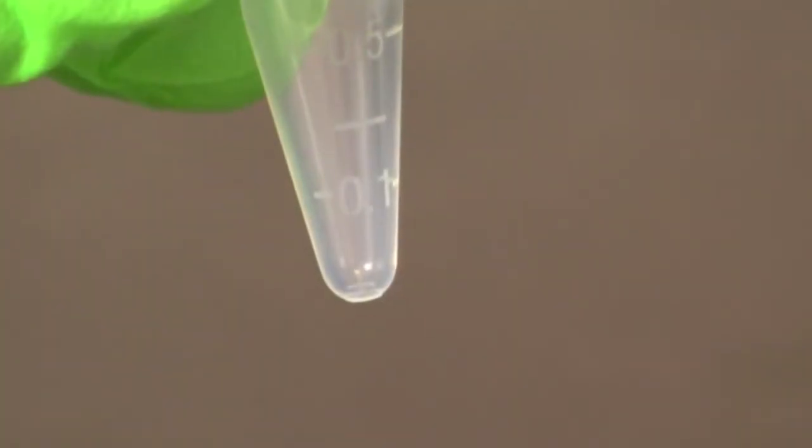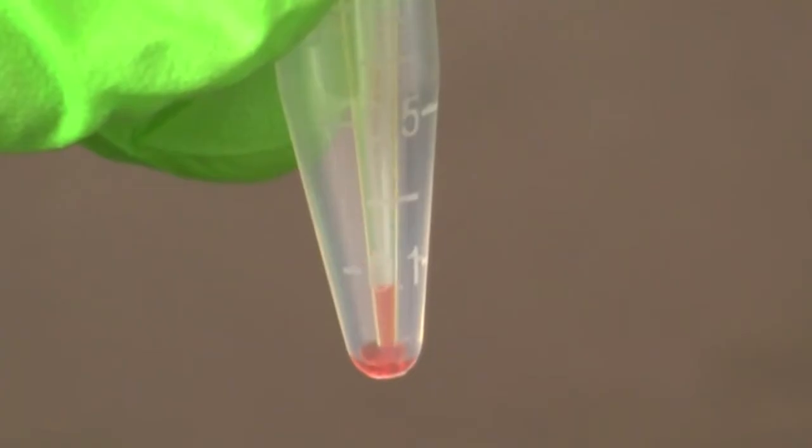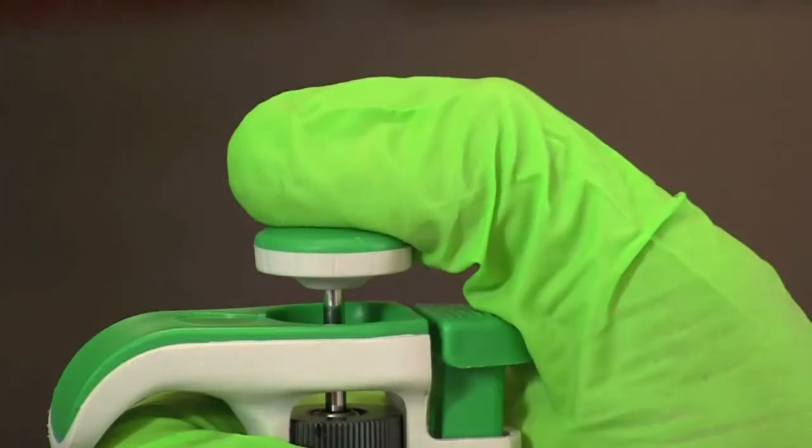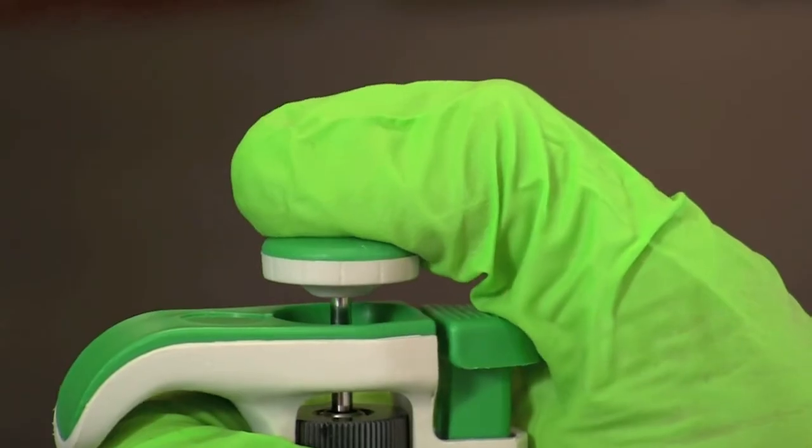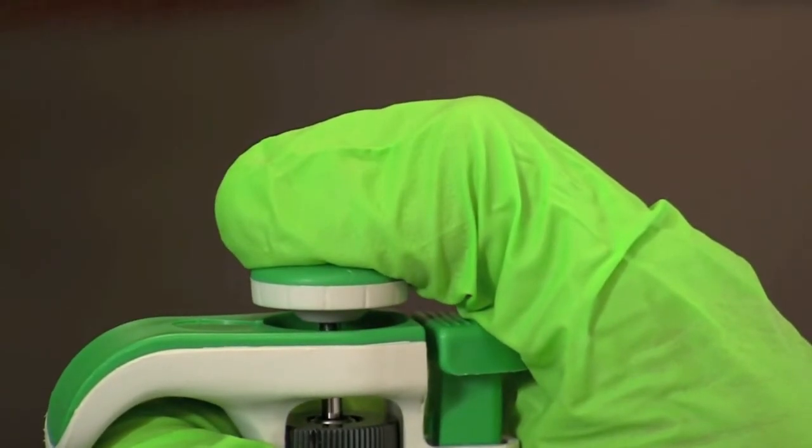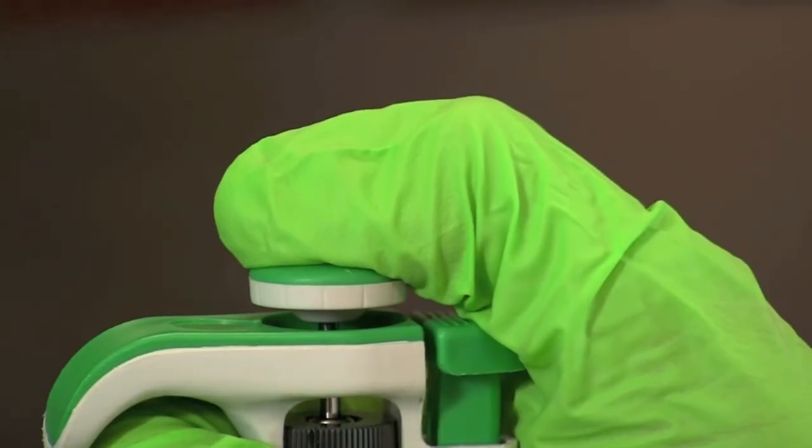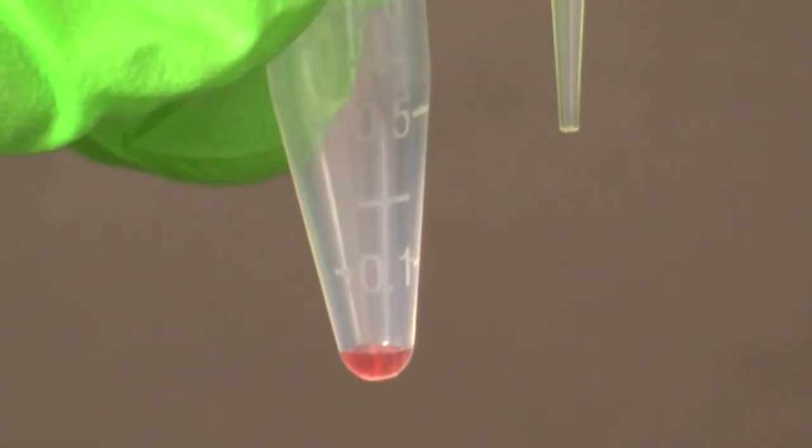To complete the transfer of a sample place the micropipette tip into a fresh microtube. Slowly depress the plunger button pausing at the first stop. Then continue depressing until the second stop. Now while holding the plunger button down remove the micropipette tip from the microtube. Once out of the microtube you can release the plunger button.